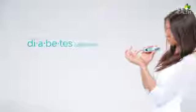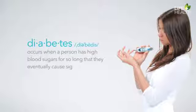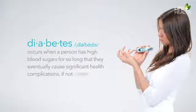So what exactly is diabetes? How does it work and what effect does it have on the body? Before we continue in this course we need to make sure to have a clear understanding of the diabetes disease process. Diabetes occurs when a person has high blood sugars for so long that they eventually cause significant health complications if not corrected.